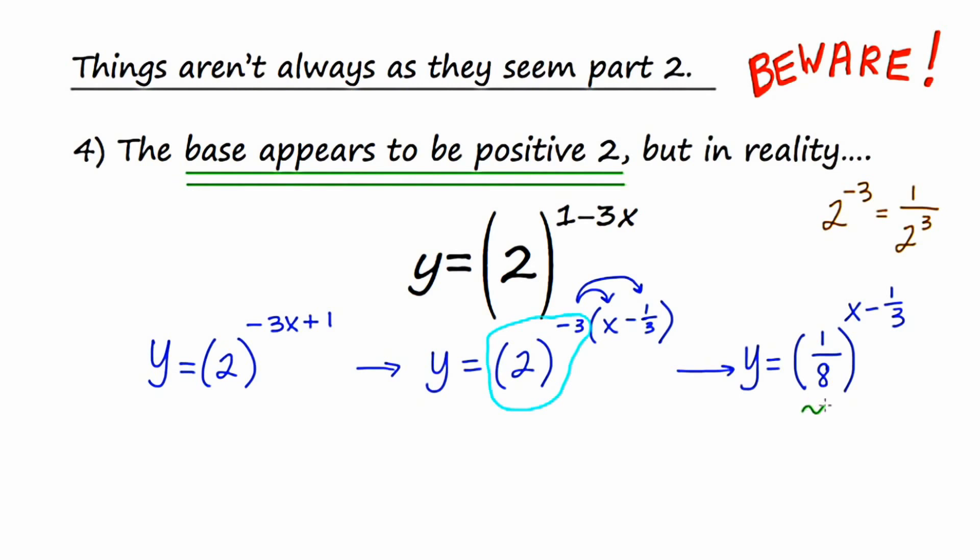Now, because this b value, this base, is a fraction between 0 and 1, we have exponential decay. The base is 1 eighth. At first we thought the base was 2, so that's kind of a big change. And we also know, because of the minus 1 third in our exponent, that this graph will be shifted 1 third units to the right.